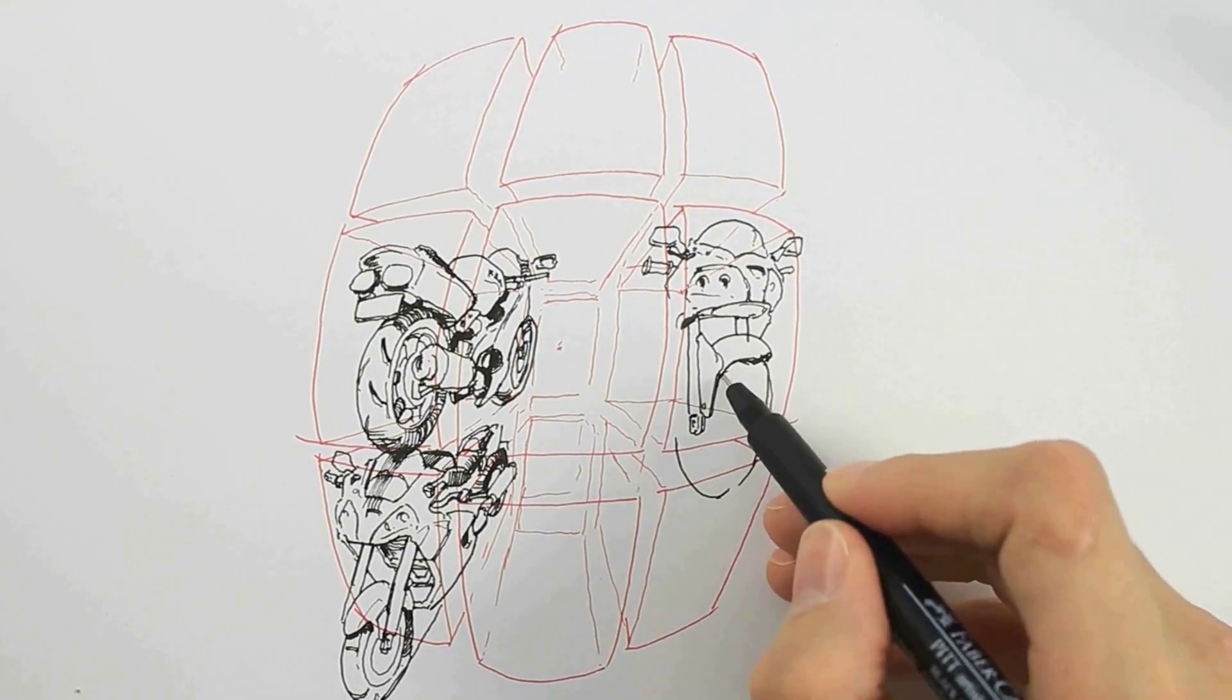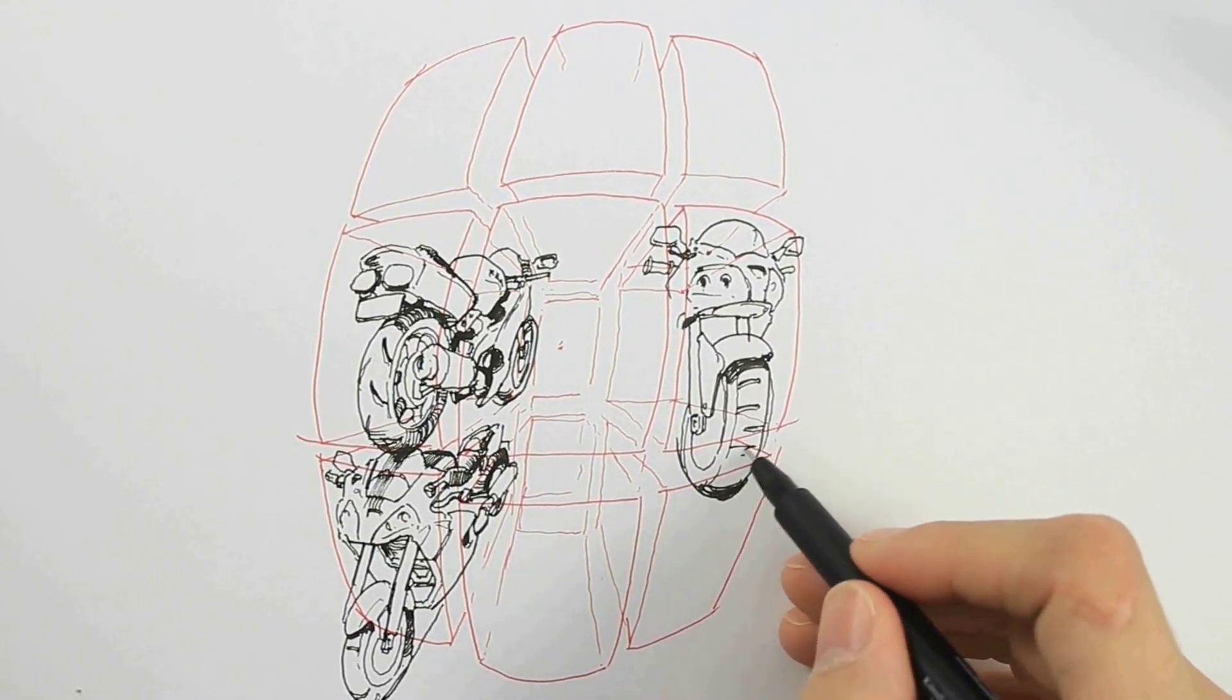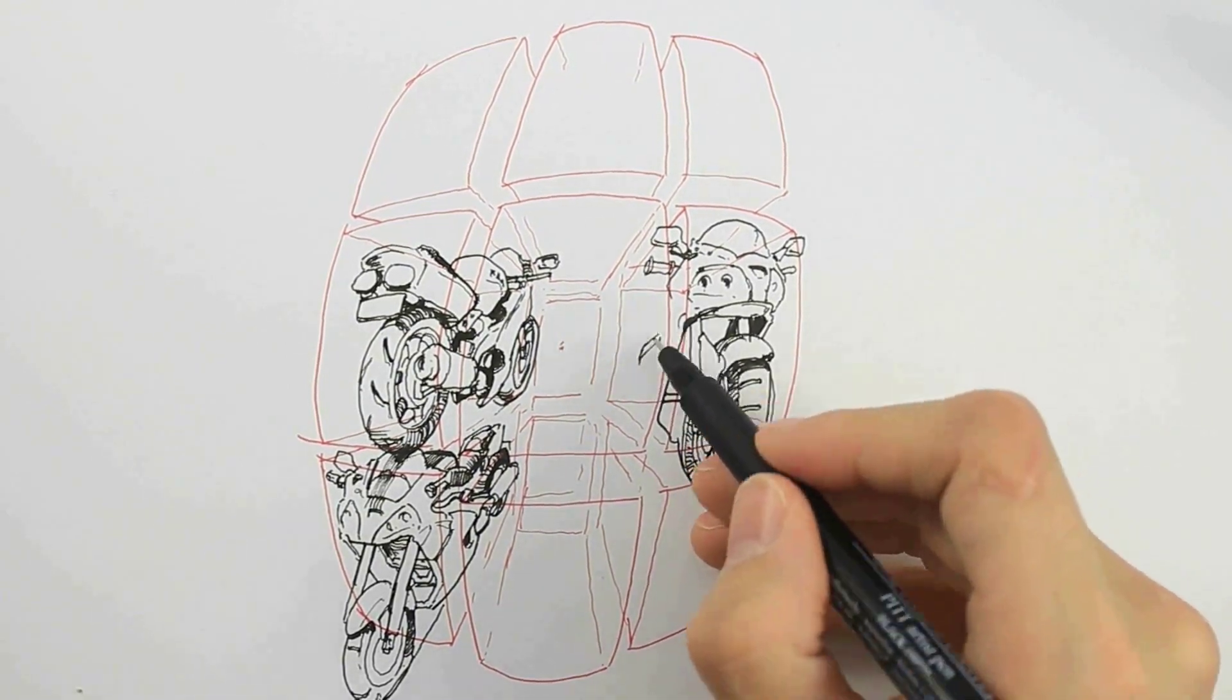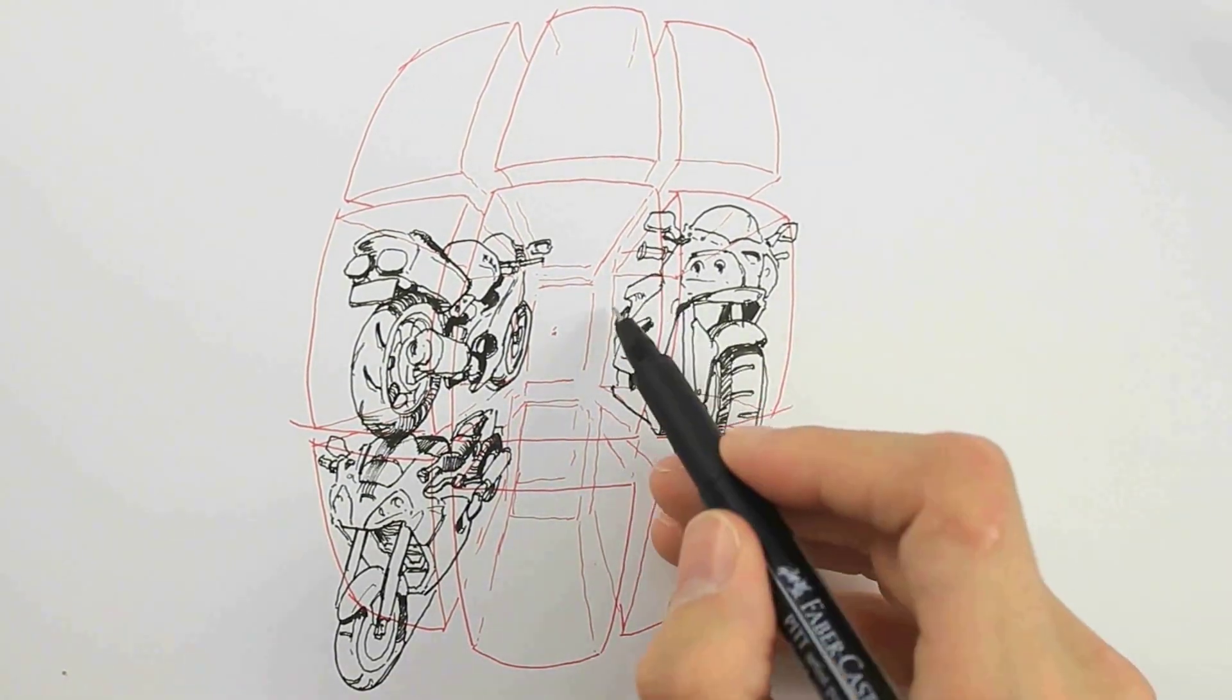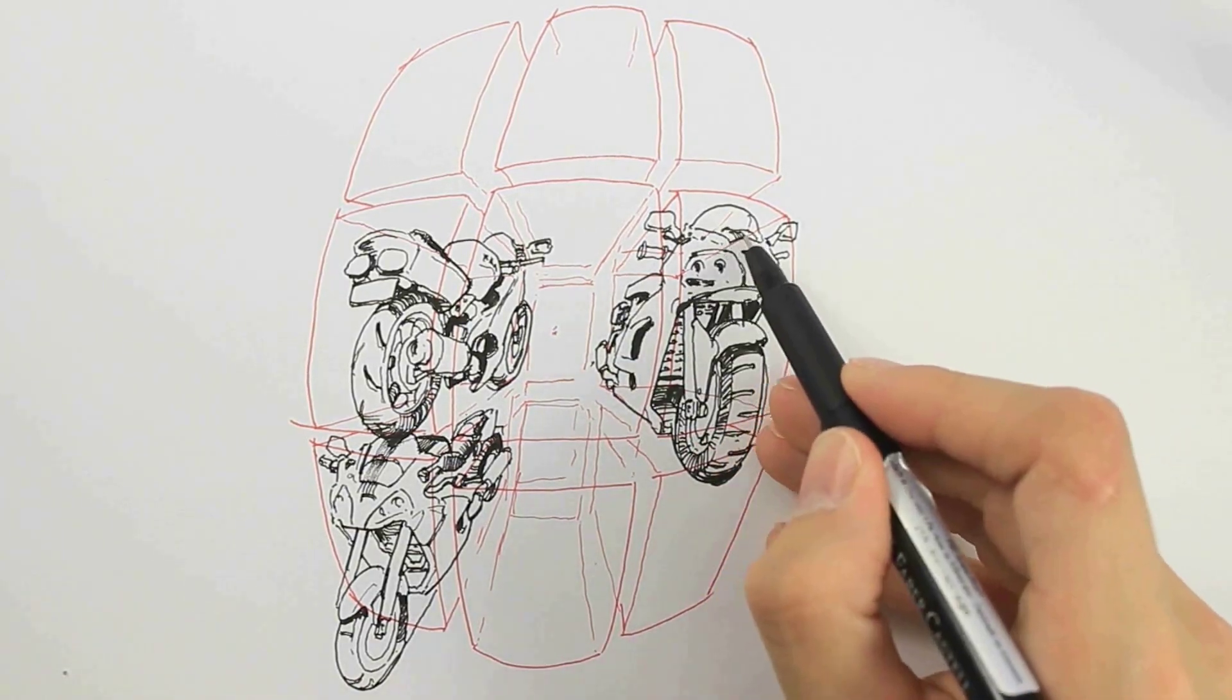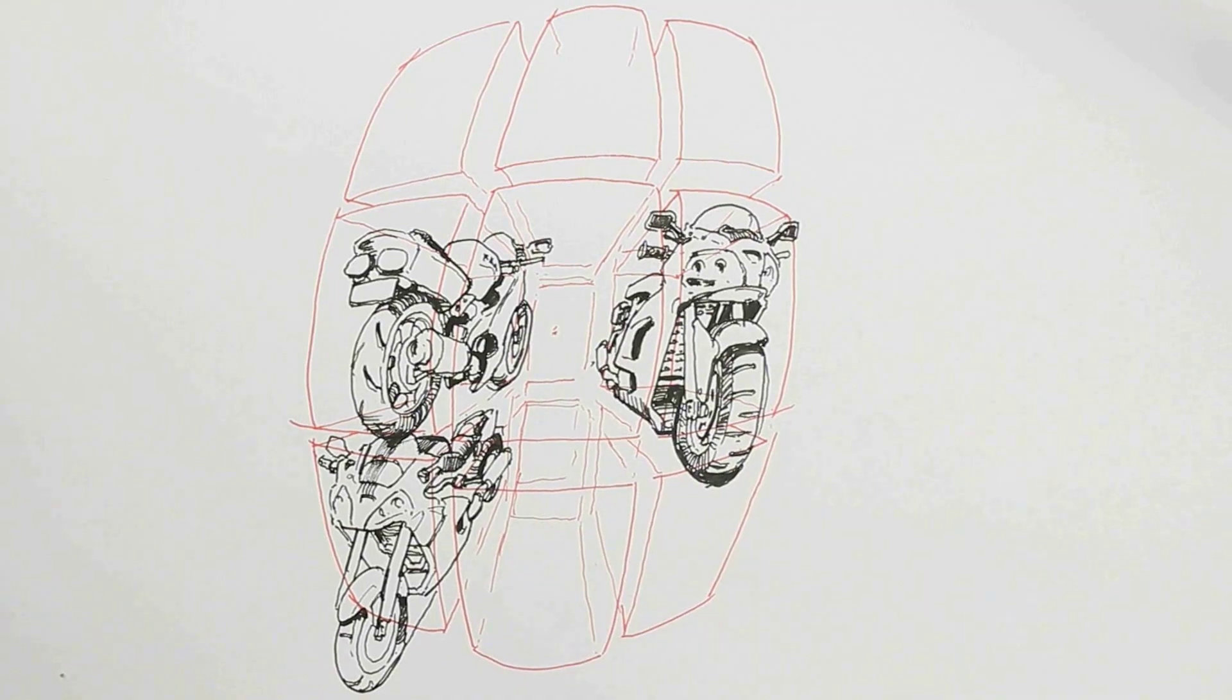Again, I'm really trying to visualize those cross sections as I fill out the major forms of the bike. Once those are established, we can work out secondary problems like the minor details, hatching, and textures. But as I often try to hammer home in these videos, perspective is really the most important foundation of drawing.